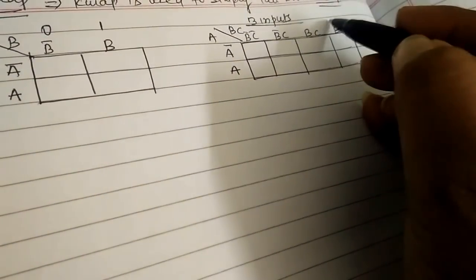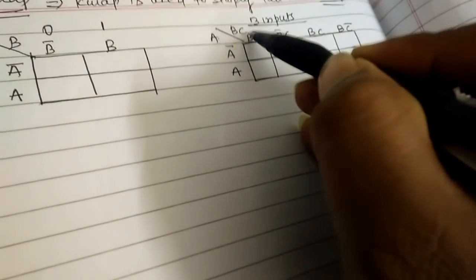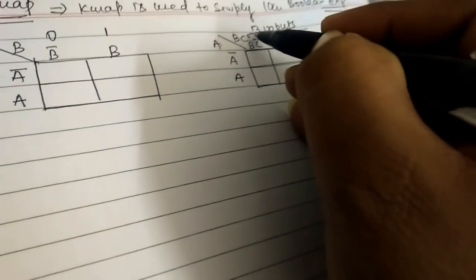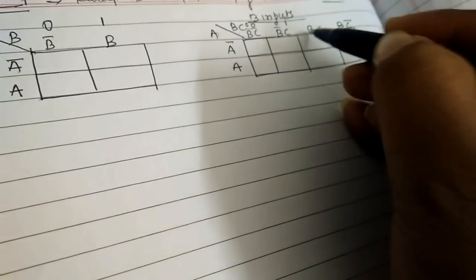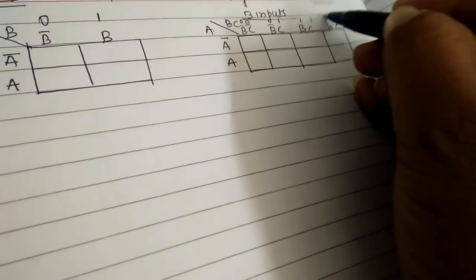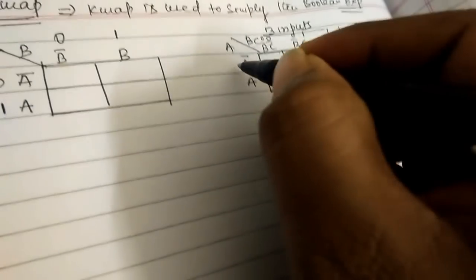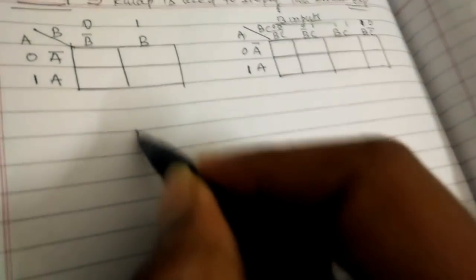With three inputs — one being A, and the other two being B and C — the columns are: B bar C bar (00), B bar C (01), BC (11), and BC complement (10). That last column is represented as zero and one.